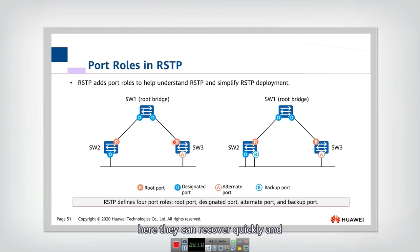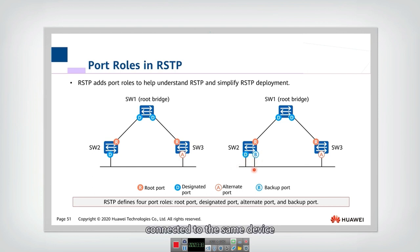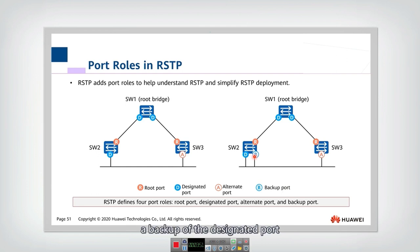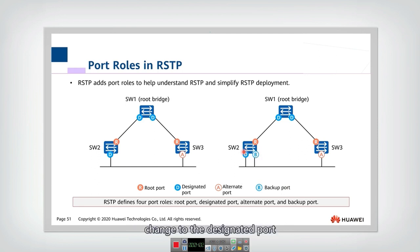This allows the switch to recover quickly. The other new role is the backup port. If there are two links connected to the same device, one is the designated port, and RSTP will set the other as the backup port. You can think of the backup port as a backup of the designated port. If the designated port fails, the backup port will immediately become the designated port to transmit.